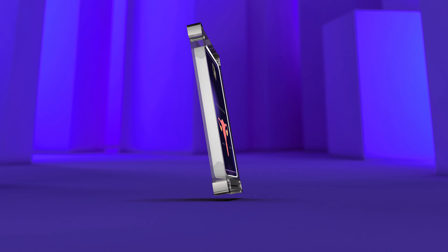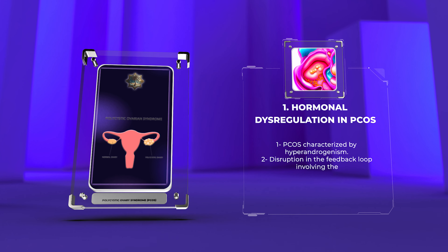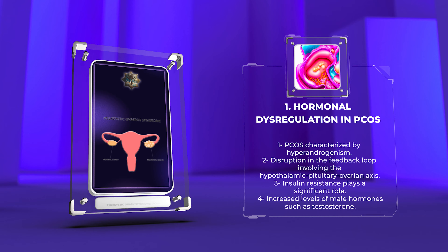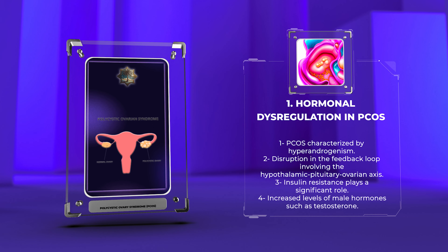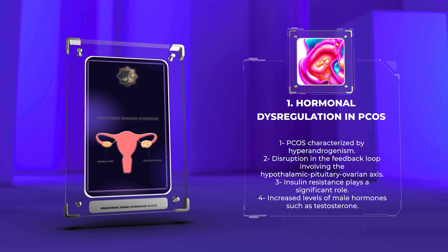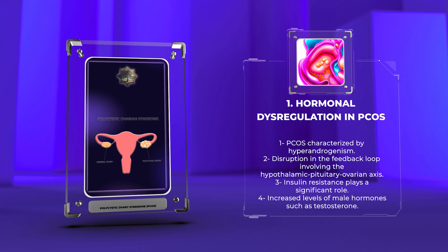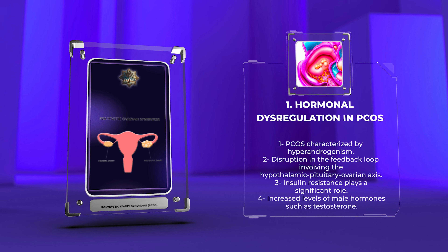Hormonal dysregulation in PCOS: To understand the intricate web of mechanisms behind PCOS, we must first explore the hormonal dysregulation at play. PCOS is characterized by hyperandrogenism, meaning increased levels of male hormones such as testosterone. Additionally, there is a disruption in the normal feedback loop involving the hypothalamic-pituitary-ovarian axis, leading to irregular menstrual cycles and anovulation. Insulin resistance also plays a significant role, contributing to hyperinsulinemia and further exacerbating the hormonal imbalances.